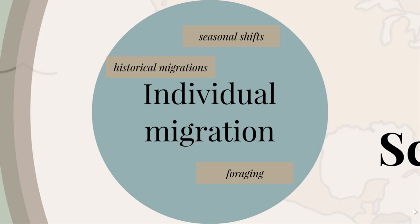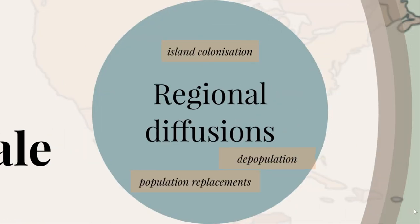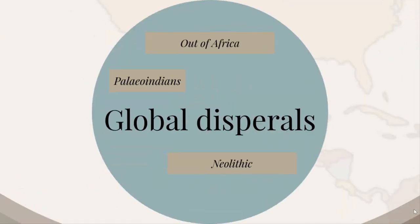At the individual scale, we also look at seasonal shifts in the foraging radius and foraging as such — our main unit is one person. Then we can think about households: island colonization events which involve more than one person, depopulations, and population replacements when whole communities come in and out. These may be on a larger or smaller scale, but I put them in the regional category.